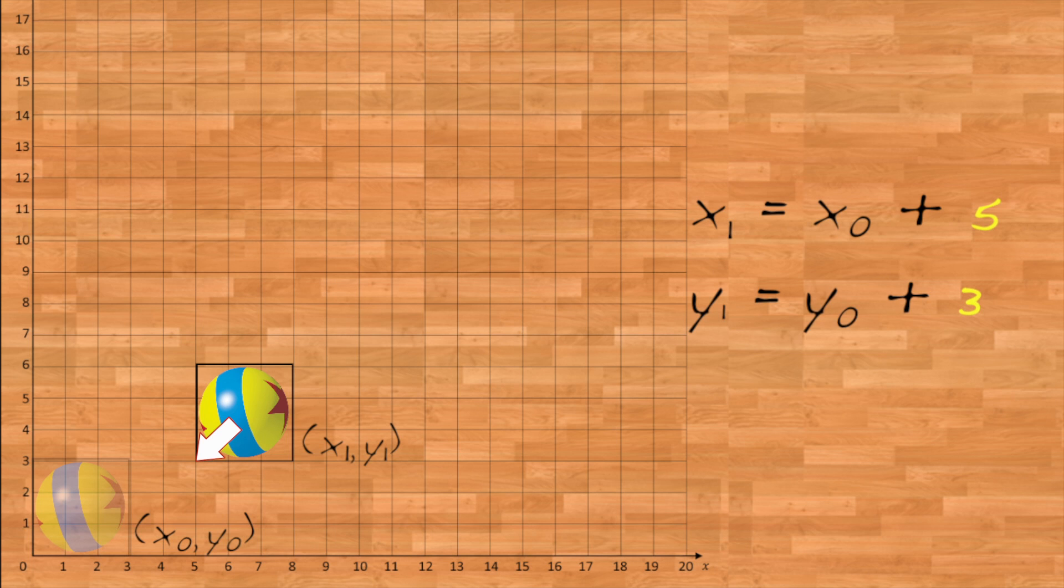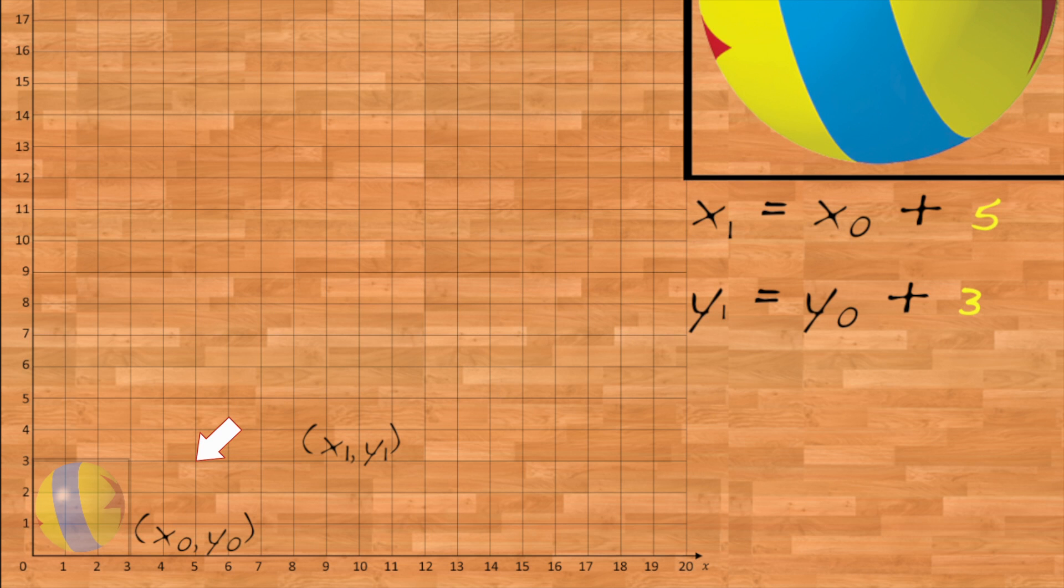Now, suppose we scale about the origin by a factor of 4. Where does x1, y1 go? Let's call the point it goes to x2, y2. Scaling says x2 equals 4 times x1 and y2 equals 4 times y1.